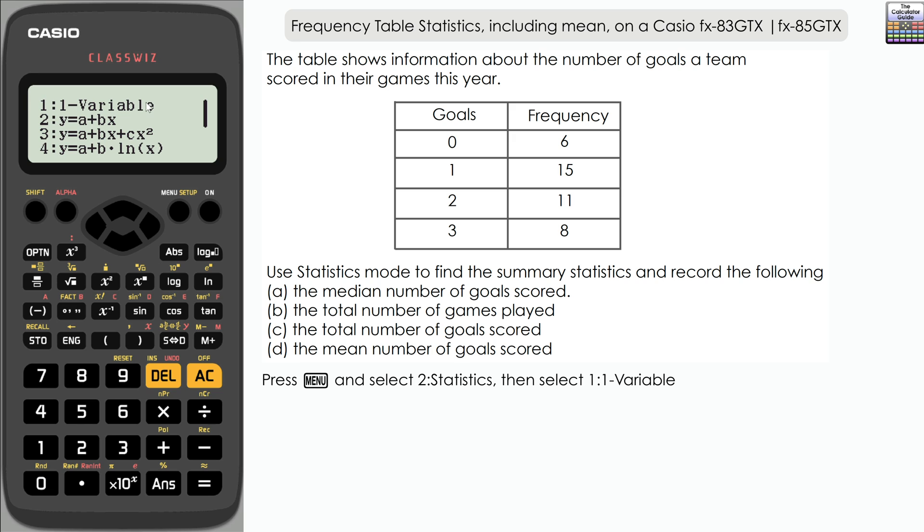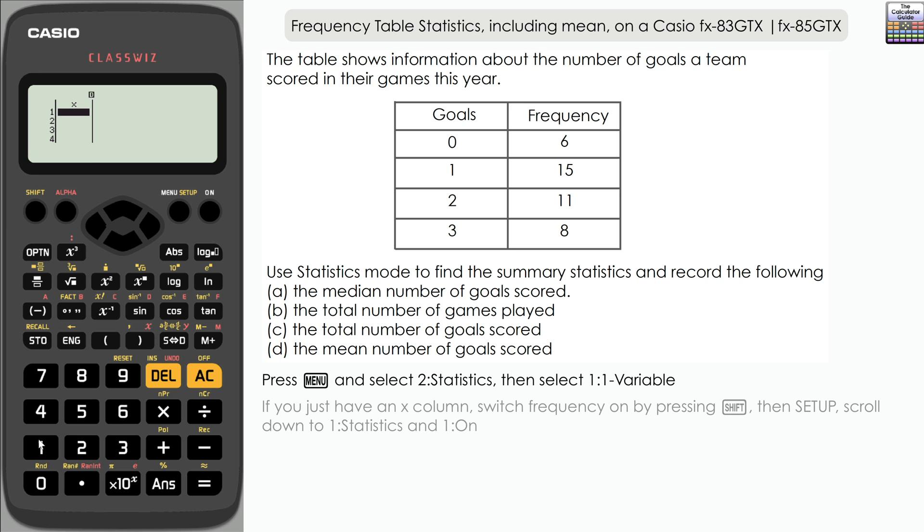At the moment the input on the calculator just has an X column which will represent the number of goals. We need a frequency column to be included. Press shift and setup, then scroll down to statistics, and turn the frequency on which is one. You will now see that our table has a frequency column.